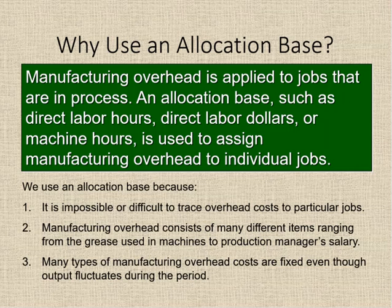We have to allocate overhead costs to jobs for a variety of reasons. It's difficult, if not impossible, to trace actual overhead costs to a specific job. For example, the cost of grease for machinery is part of manufacturing cost, but it would be impossible to accurately trace the amount of grease consumed to manufacture one unit. Manufacturing overhead also includes many different costs that are hard to gather at one time. Additionally, a job may be complete and sold before actual overhead costs are determined — for instance, you only receive your utility bill once a month, so costs may not be known until after the product is already sold.